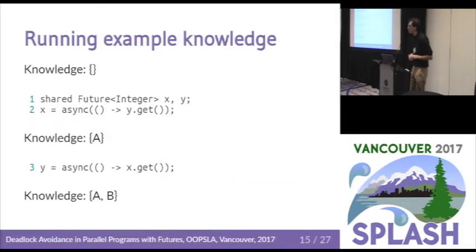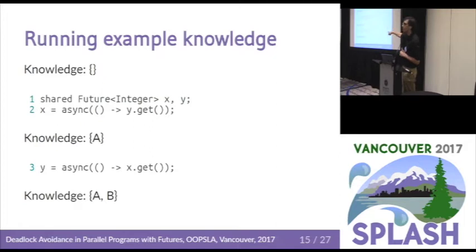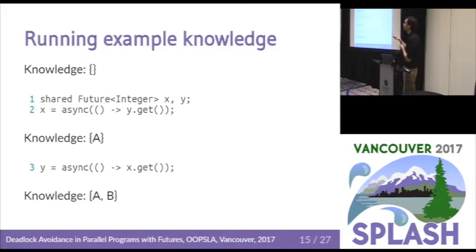Going back to our running example: the parent program starts with an empty knowledge set, then spawns task A (now it knows A), then spawns task B (now it knows B). Task A does not know of any other task when it starts, because it inherits the parent's knowledge at spawn time, which is empty. When task A tries to wait for task B, B is not in its knowledge set, which is empty — therefore there's an error.